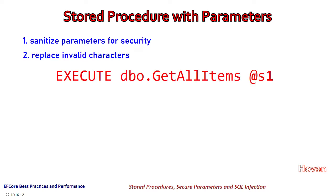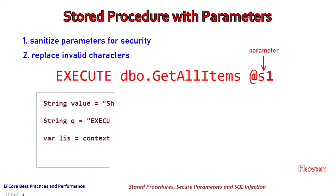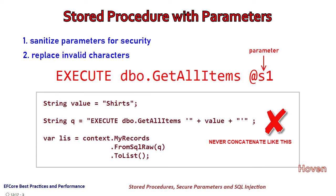Suppose we have to execute a stored procedure: EXECUTE dbo.GetAllItems @s1. In this statement, the name of the parameter is s1. The wrong way of calling this stored procedure is to use string concatenation to construct the query string. You might be tempted to do this, but you should never do this because it is prone to SQL injection attacks.